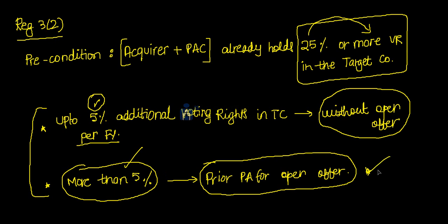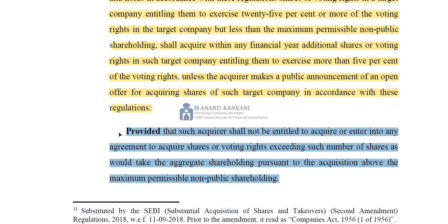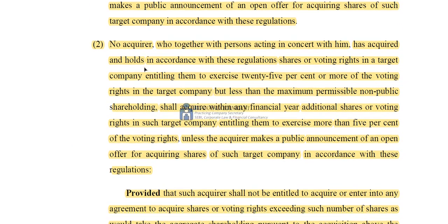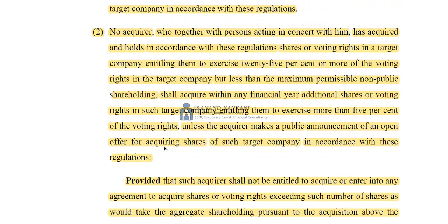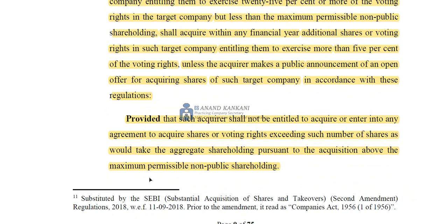Now let's read the proviso. It states that such acquirer shall not be entitled to acquire or enter into any agreement to acquire shares or voting rights exceeding such number of shares as would take the aggregate shareholding pursuant to the acquisition above the maximum permissible non-public shareholding. So this proviso puts another restriction: regulation 3(2) says you can acquire up to 5% in a financial year without attracting the open offer obligation, but this proviso restricts you from even acquiring that 5% if it would take your aggregate shareholding above the maximum permissible non-public shareholding.